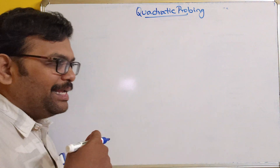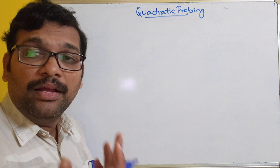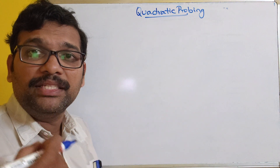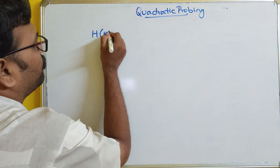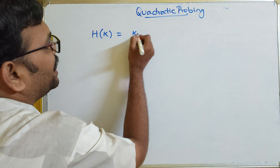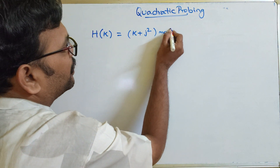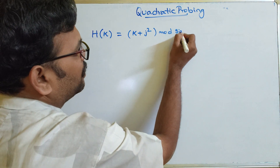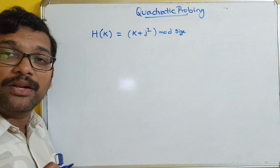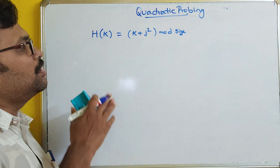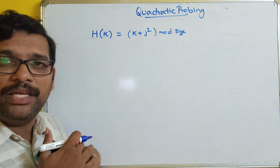In quadratic probing, instead of adding just a j value starting from 1, here we add the j² value. The hash function is: h'(k) = (k + j²) mod (hash table size). This is the formula we use to find the hash code, i.e., where the key should be stored.